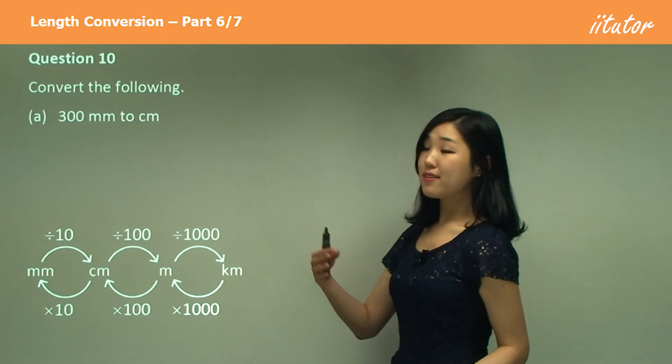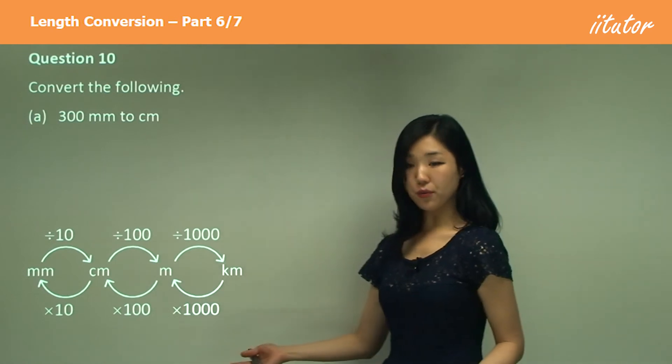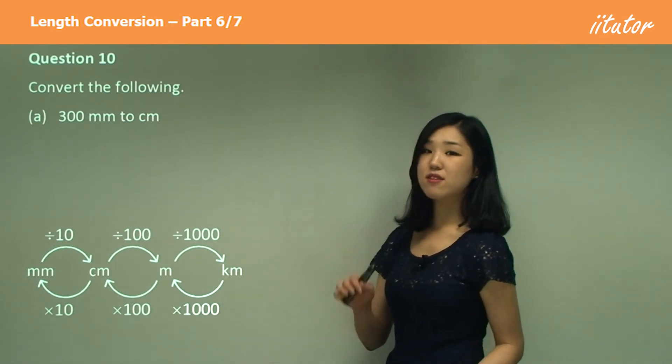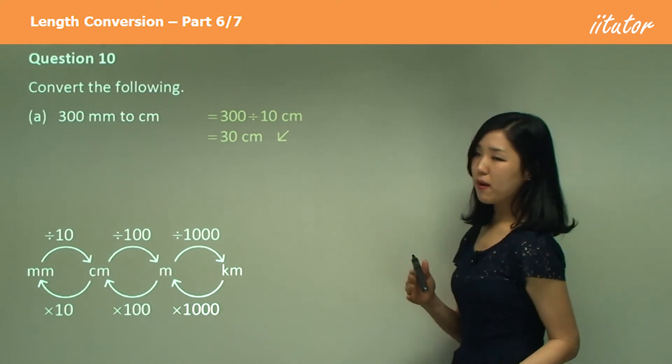This time millimeters to centimeters, so smaller unit to a larger unit. So what do we do? We need to divide, divide by 10, which gets 30 centimeters. Try the next two by yourself guys.